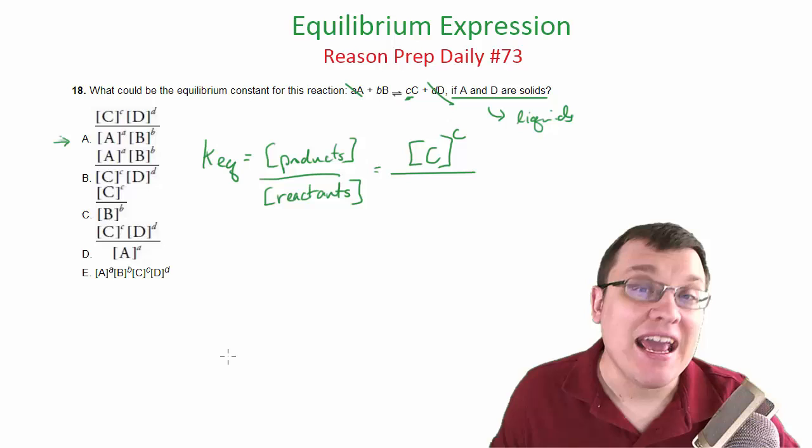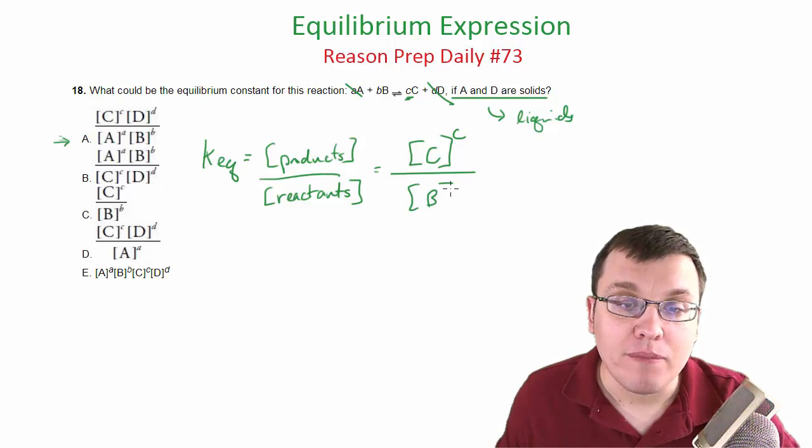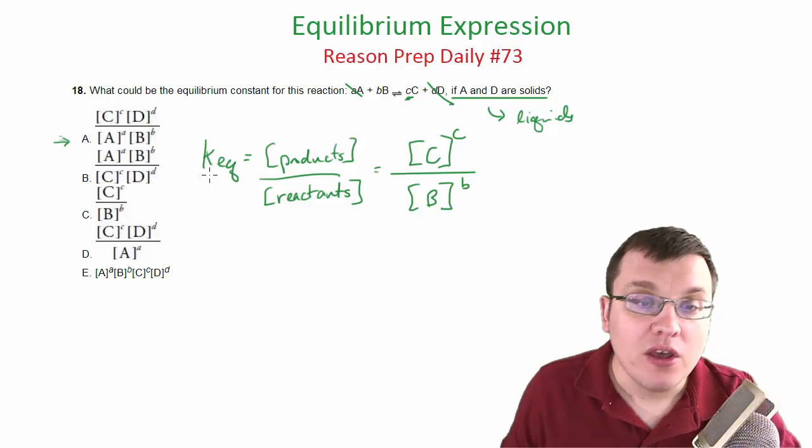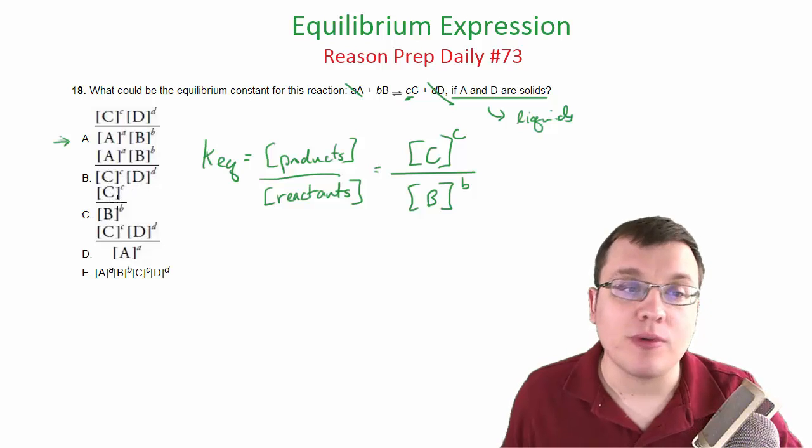Now on the bottom, we're not going to have A because A is a solid, but we're going to have B. So we're going to have the concentration of B to the B power. So this is going to be our equilibrium expression, or the equilibrium expression to get us the equilibrium constant.